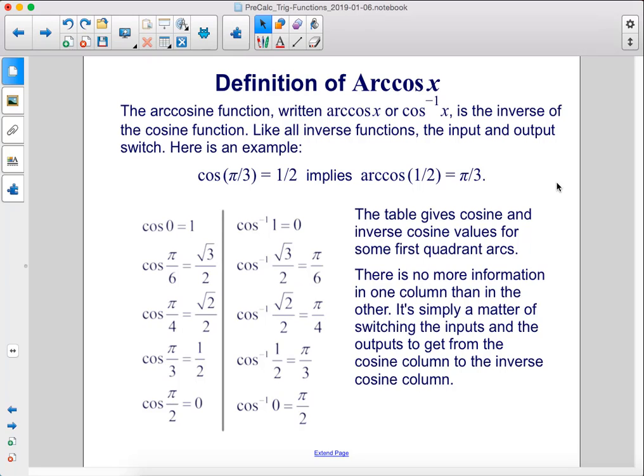The arc cosine function, written arc cosine x, or cosine to the negative 1 power of x, is the inverse of the cosine function. Like all inverse functions, the input and output switch. Here's an example: cosine of π/3 equals 1/2 implies that arc cosine of 1/2 equals π/3.